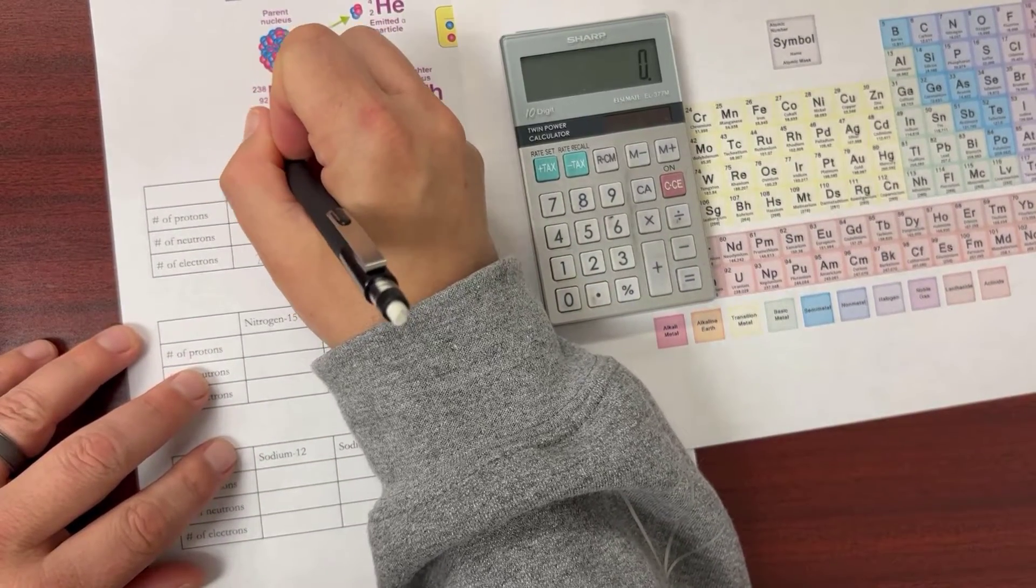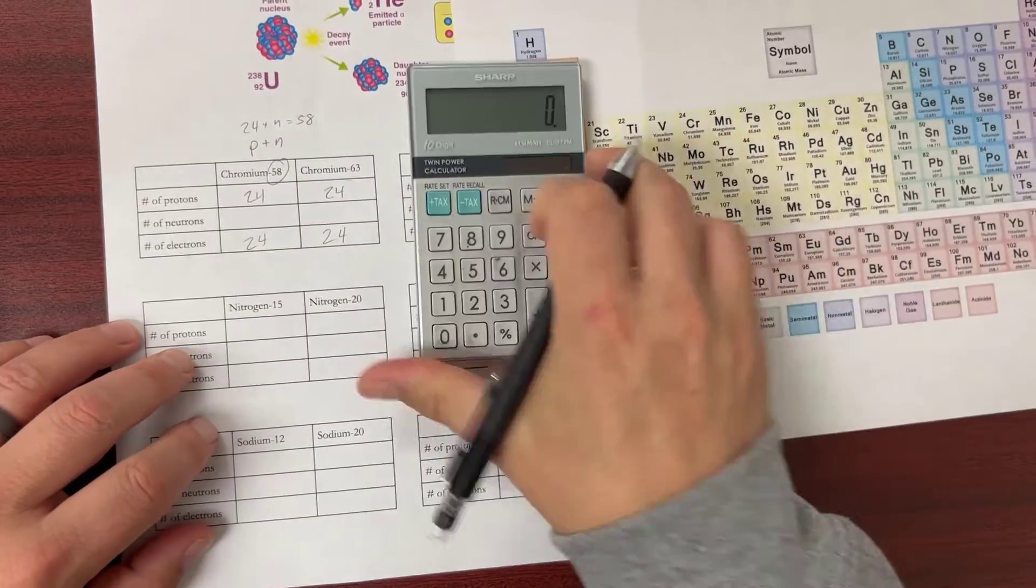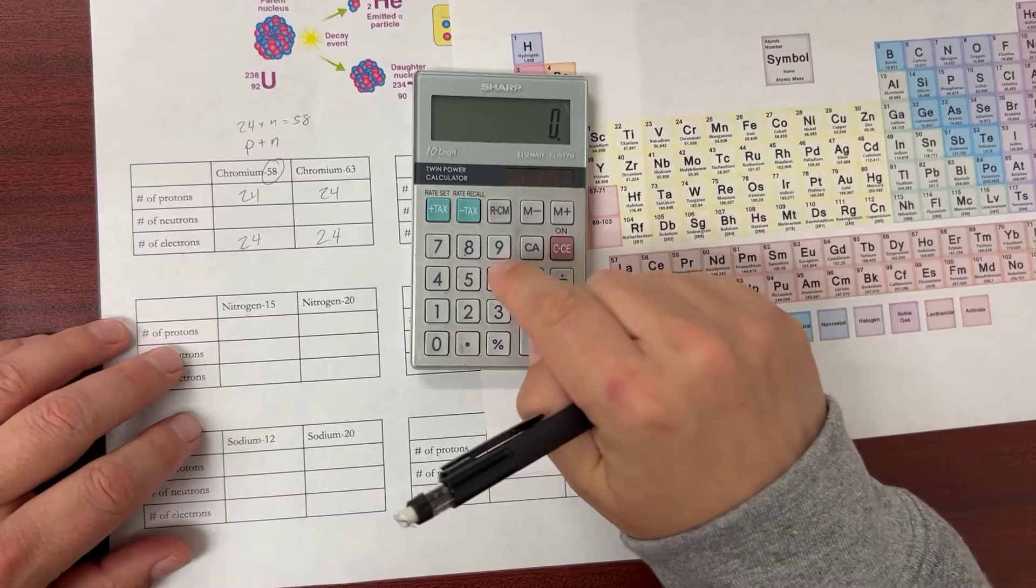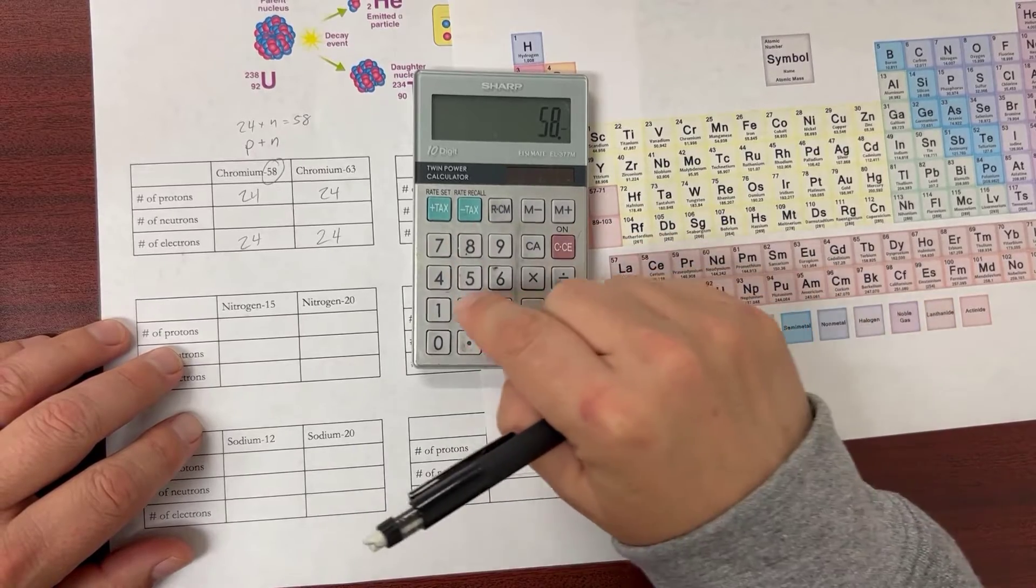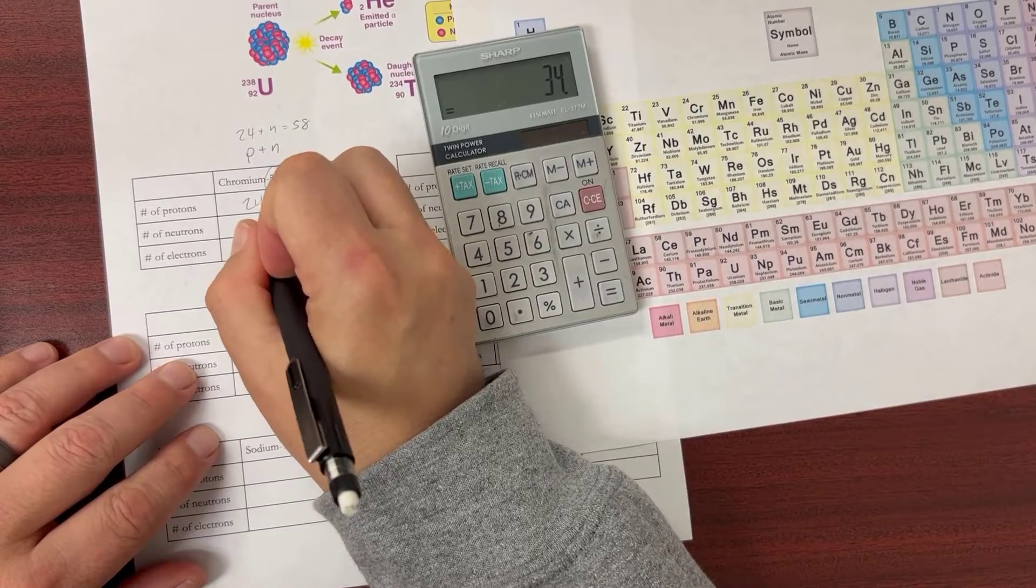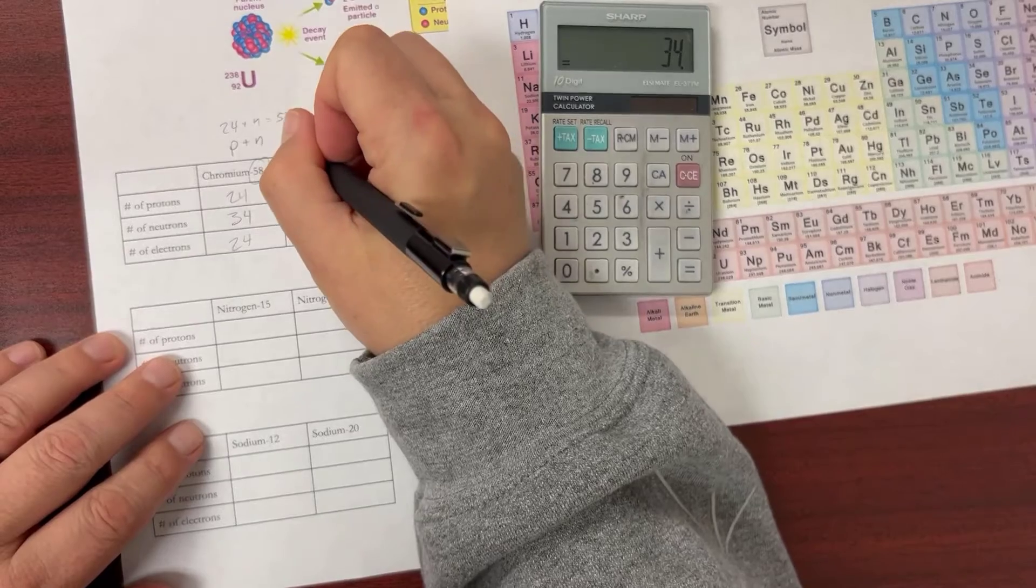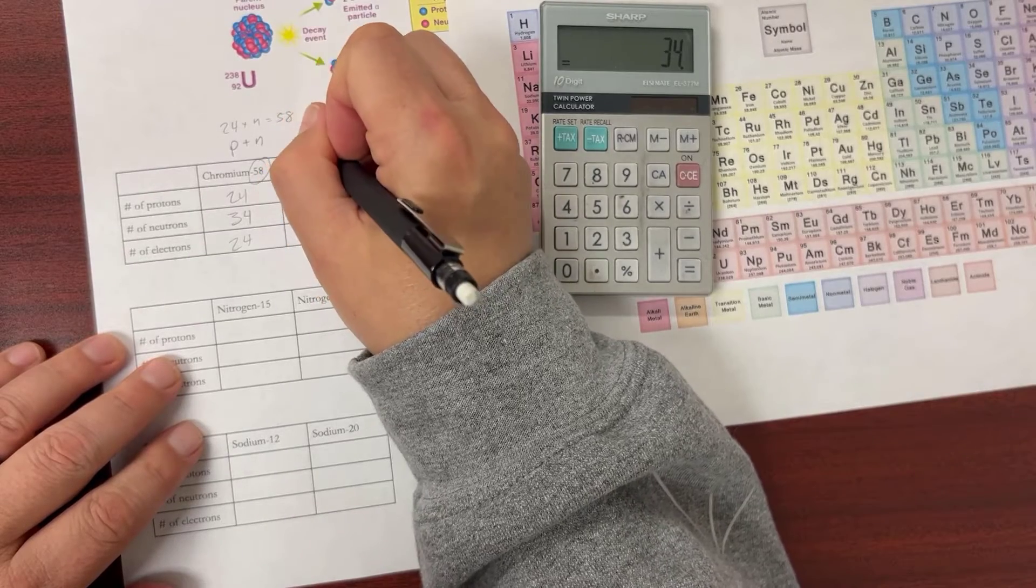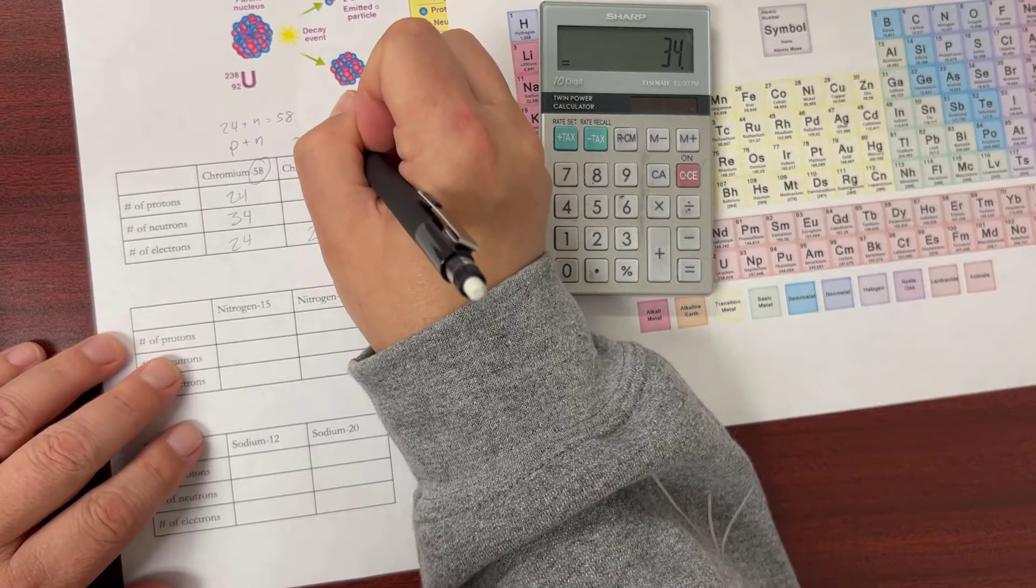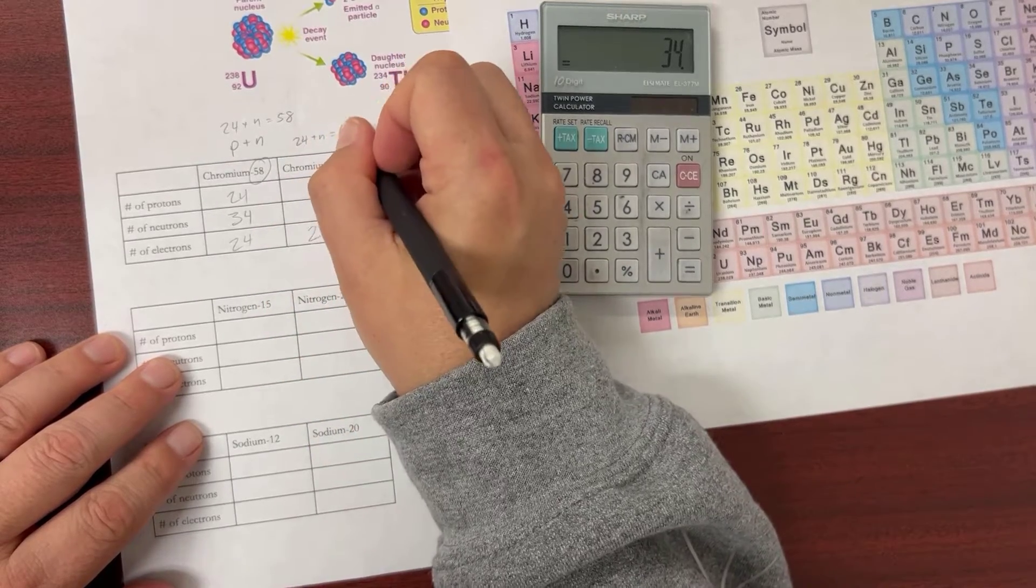Using my calculator, 58 - 24 = 34 neutrons. Now chromium-63 is a little different. I still have 24 protons, but instead of 58, I'm going to have a mass of 63.